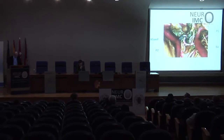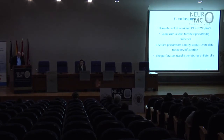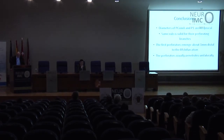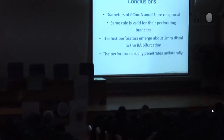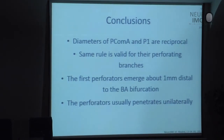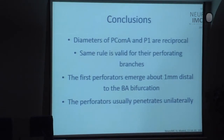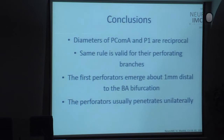From this point of view, sacrifice of this type of vessel is a tough decision and has to be taken very carefully. In conclusion: the diameters of the posterior communicating artery and the P1 segment are reciprocal, and the same rule is valid for their perforating branches. The first perforators emerge about 1 mm distal to the basilar artery bifurcation — important for surgery when placing clips, and also for endovascular procedures, as the secure region is only 1 mm from the basilar artery bifurcation. The perforating branches of the P1 segment usually penetrate unilaterally but sometimes bilaterally.